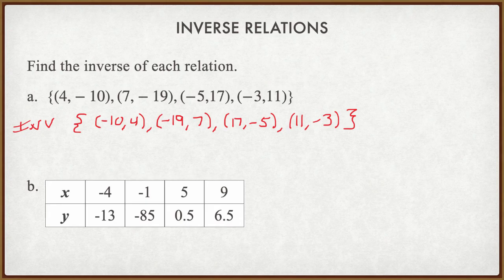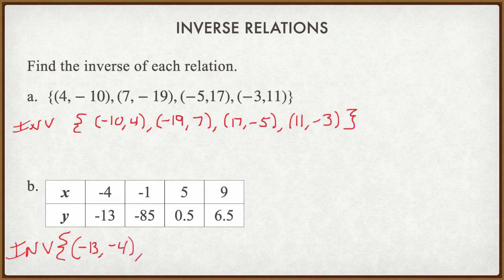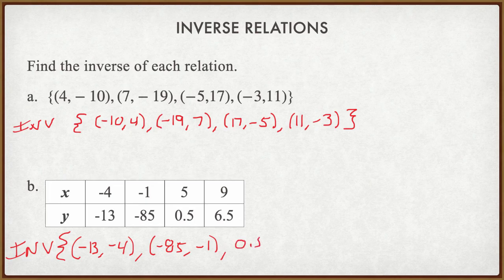When we're given the table, we do the same thing — we are going to switch out the x's and y's for each other. For my inverse for part B, again I'm going to use set notation. My y is -13, that becomes my x-coordinate. The x-coordinate of -4 becomes the y-coordinate. We do the same thing with the other points: (-85, -1), (0.55), and (6.59). And that is my inverse of the table.